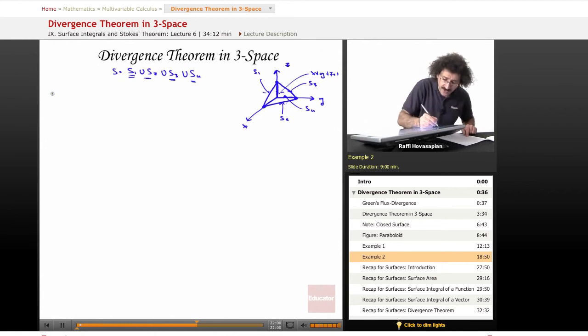Let's go ahead and calculate the divergence. Let me rewrite F so we have it on the page: xyz, x squared y squared z squared, and x cubed y cubed and z cubed.